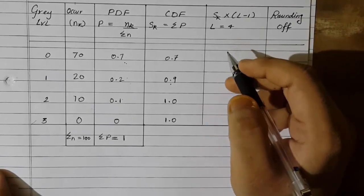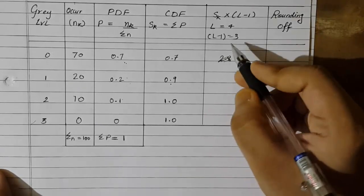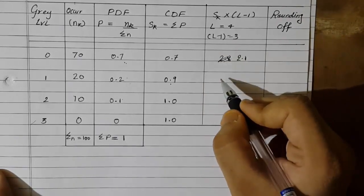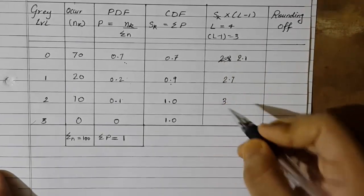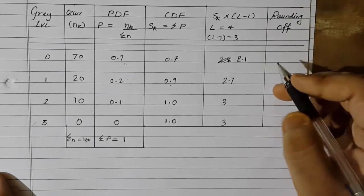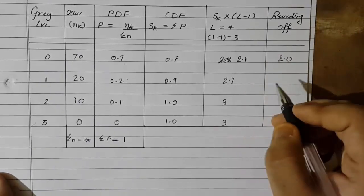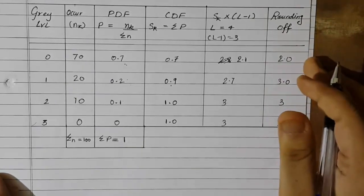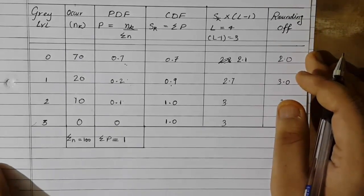Now we calculate the values in the column S_k × (L−1). S_k is the CDF, so: 0.7 × 3 = 2.1, 0.9 × 3 = 2.7, and 1.0 × 3 = 3, and the last entry is also 3. Now I will round off these values: 2.1 rounds to 2, 2.7 rounds to 3, and the remaining values stay the same. These rounded values are the new gray levels obtained from histogram equalization.